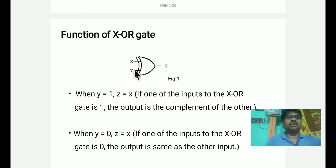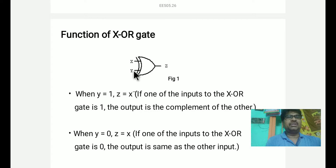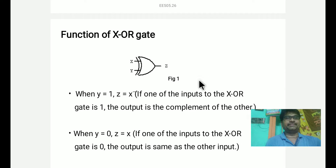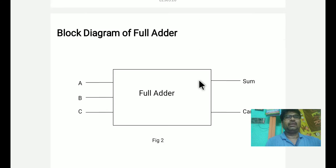When Y is equal to 0, Z is equal to X — the output follows the input. When Y is equal to 1, Z is equal to X-bar — the output is the complement of X. This is the brief operation of the XOR gate showing X and X-bar behavior.